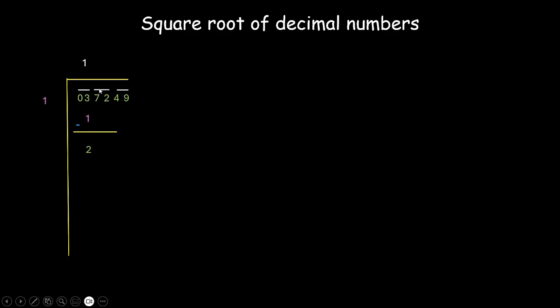Then we'll bring the entire pair down. So we'll bring 7, 2 down over here. Now whatever number we have just put over here, we'll bring it here and we'll add these two. So 1 plus 1 is 2. Now the next step is very crucial. So what we now want is a number which we can put here and here, so that when we multiply it, the result is either equal to this or less than this.